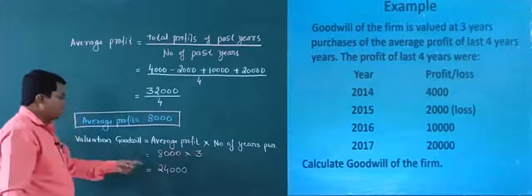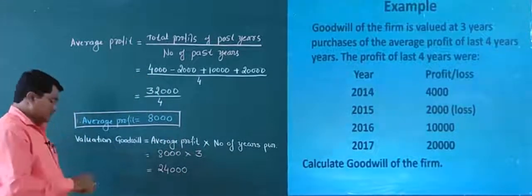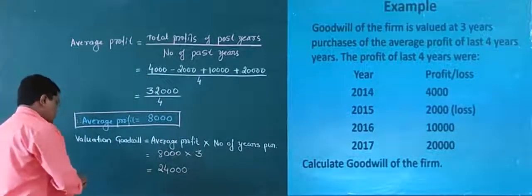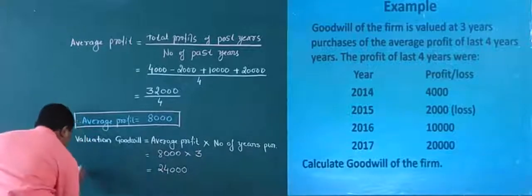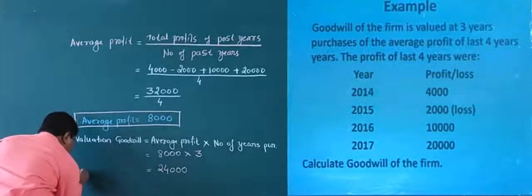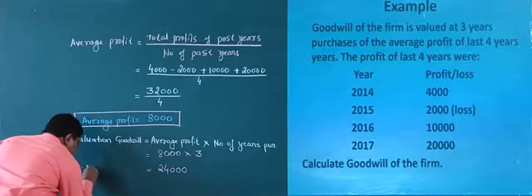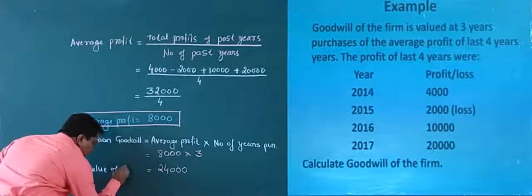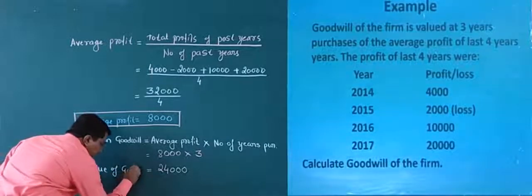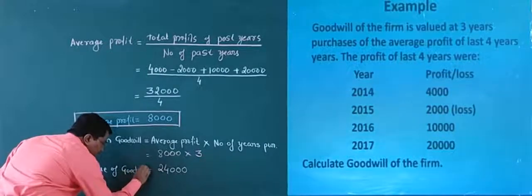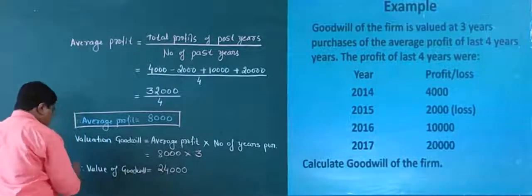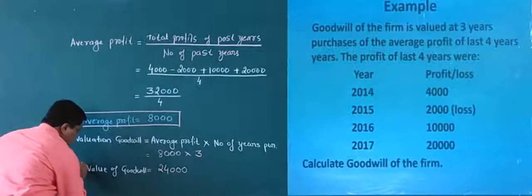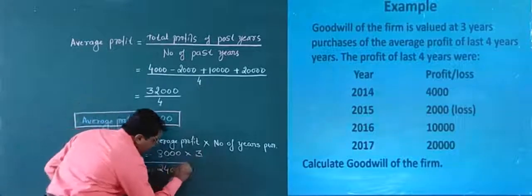This 24,000 is the value of goodwill. Value of goodwill is equal to rupees 24,000.